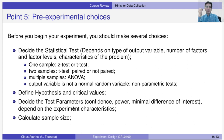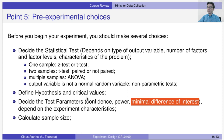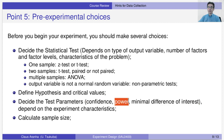If the output variable is not a random variable, consider nonparametric tests like the sign test, which were discussed in lecture six. After defining the test, define your hypothesis and critical values. The critical values depend on the minimal difference of interest. Define the confidence and power you desire, then calculate the necessary sample size for your test.